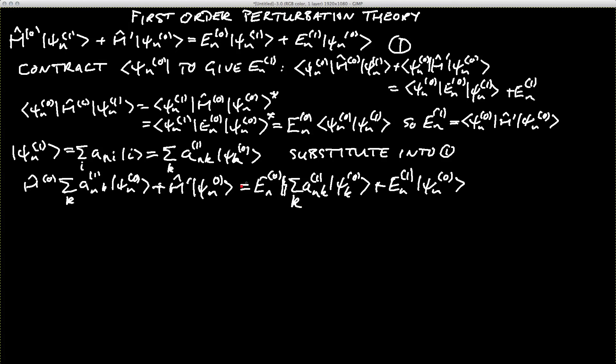That's the substitution. There's nothing terribly startling there. What we're going to do again is we're going to contract with a general bra, which is going to be psi l of 0. This is something we normally do in quantum mechanics. It's going to give us the chance to work out what matrix elements are, what expectation values are.